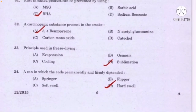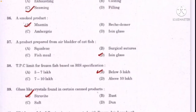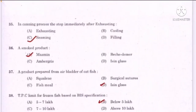A can in which the ends are permanently and firmly distended — correct answer option D: hard swell. In canning process, the step immediately after exhausting — correct answer option C: seaming. A smoked product — option A: must mean is the correct answer.